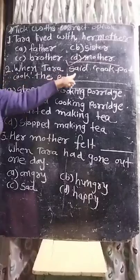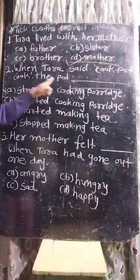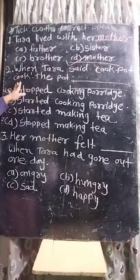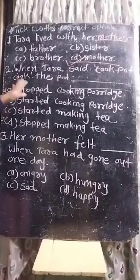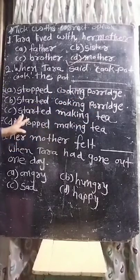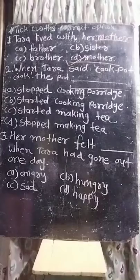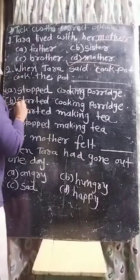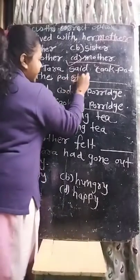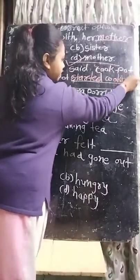Second one: When Tara said 'cook pot cook,' what did the pot do? (Jab Tara ne kaha cook pot cook, toh pot ne kya kiya?) Options: stopped cooking porridge, started cooking porridge, started making tea, or stopped making tea. Answer: The pot started cooking porridge.